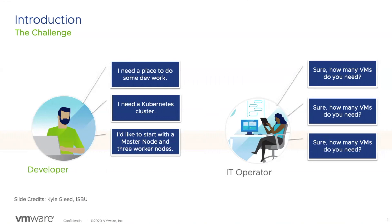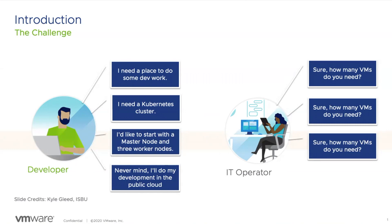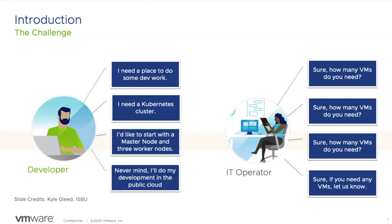After all of this, the developer is going to get frustrated and might say, never mind — I'll do my own development in public cloud. He's going to take his development and create some sort of instances in public cloud, and that's shadow IT. He needs a place to develop and produce, because that is what his job is. But for the IT operator, she might say, when you know how many virtual machines you need, let us know. The biggest problem here is that developers have their own terminologies, and IT operators only understand: tell me how many virtual machines you need, because that's what they've been using with vSphere.